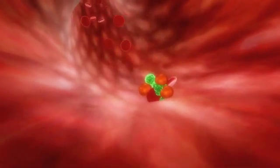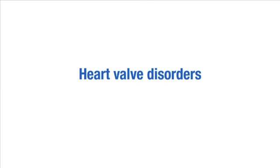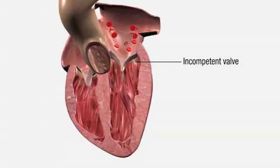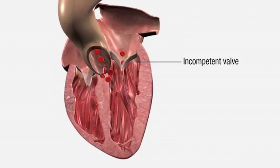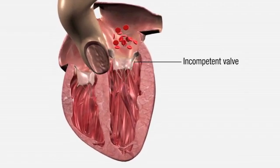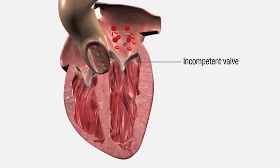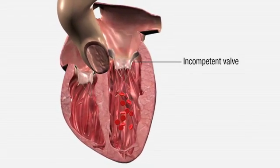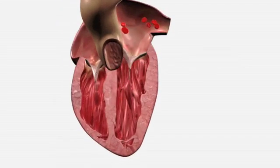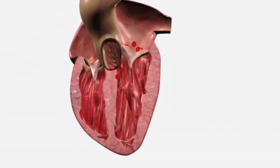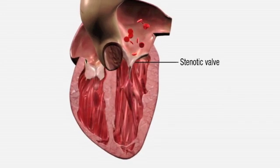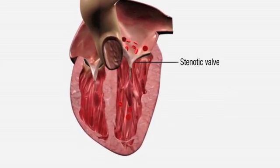Heart valves regulate blood flow through the heart during the cardiac cycle, and cardiac function is impaired if these valves become leaky or narrowed. In mitral regurgitation, an incompetent mitral valve leads to the leakage of blood back into the left atrium during systole, when normally blood should be flowing into the aorta.